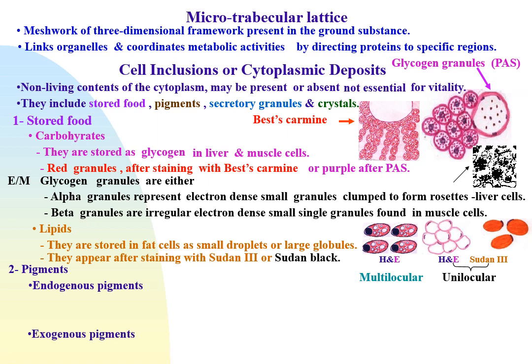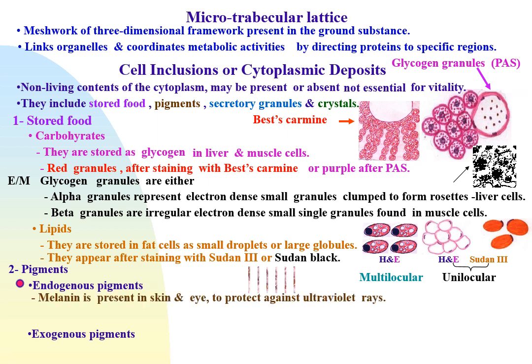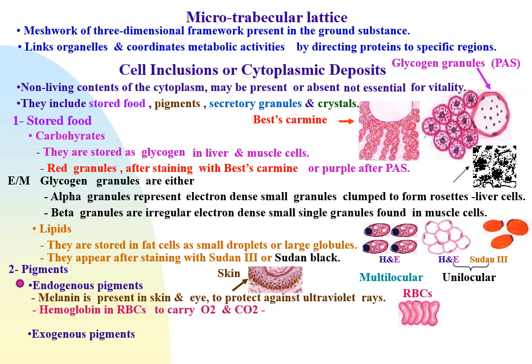Pigments are either endogenous, forming inside the body, or exogenous, forming outside the body. Endogenous pigments: melanin is present in the skin and eye to protect against ultraviolet rays. Hemoglobin is the most important and essential pigment in the body, present in red blood cells to carry oxygen and carbon dioxide. It is broken down into hemosiderin, an iron-containing pigment, which later forms bilirubin, a non-iron-containing pigment.